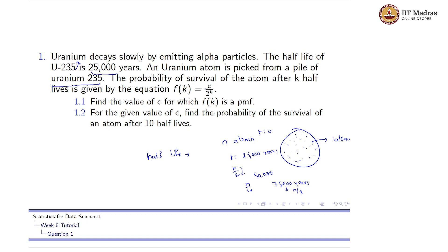So what they are asking is: the probability of survival of the atom after k half-lives is given by f(k) = c / 2^k. Initially we have n atoms, and after one half-life it would be n/2. So only half of the atoms remain, meaning the probability of an atom surviving after one half-life would be 1/2.